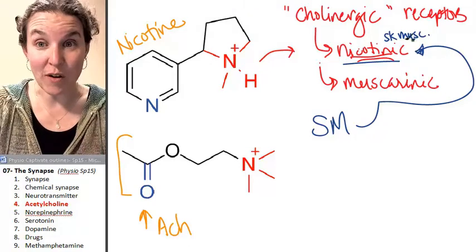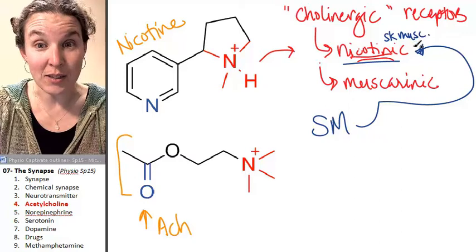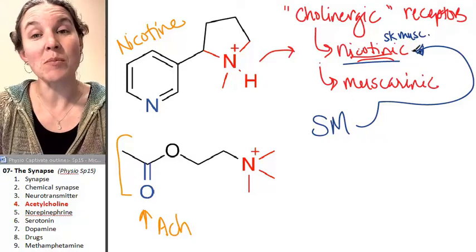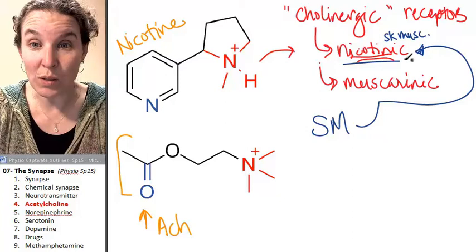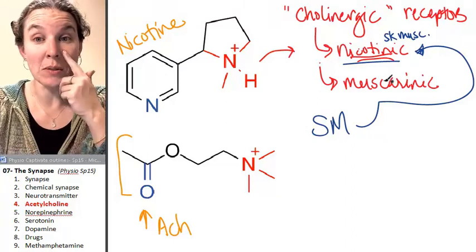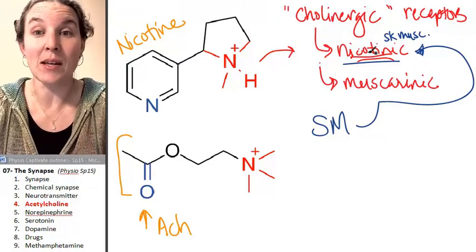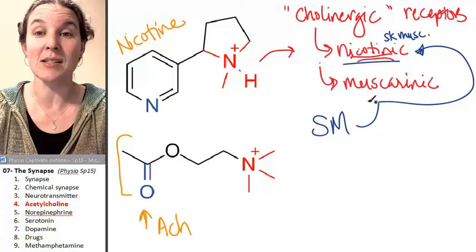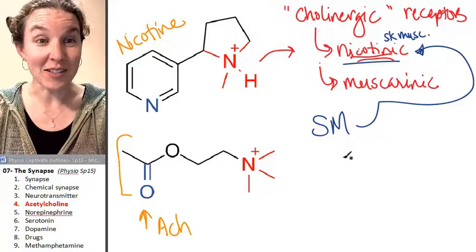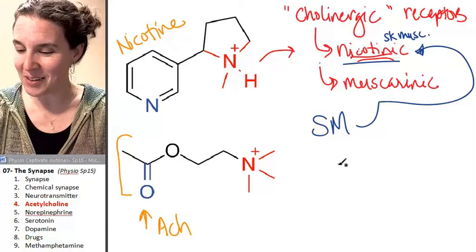Nicotinic receptors are found on skeletal muscles, and all somatic motor neurons barf acetylcholine onto those skeletal muscles at the synapse, and the acetylcholine binds to nicotinic receptors on the skeletal muscle, which is kind of cool. You wouldn't really think that.